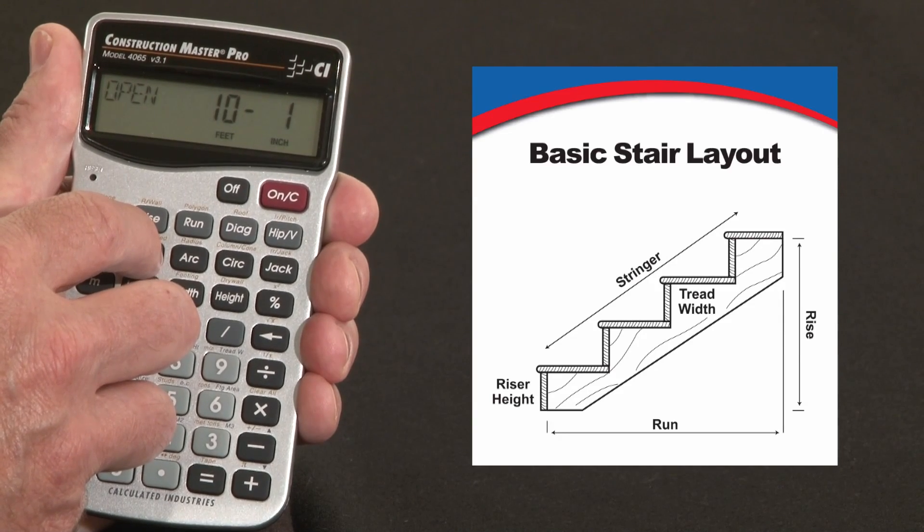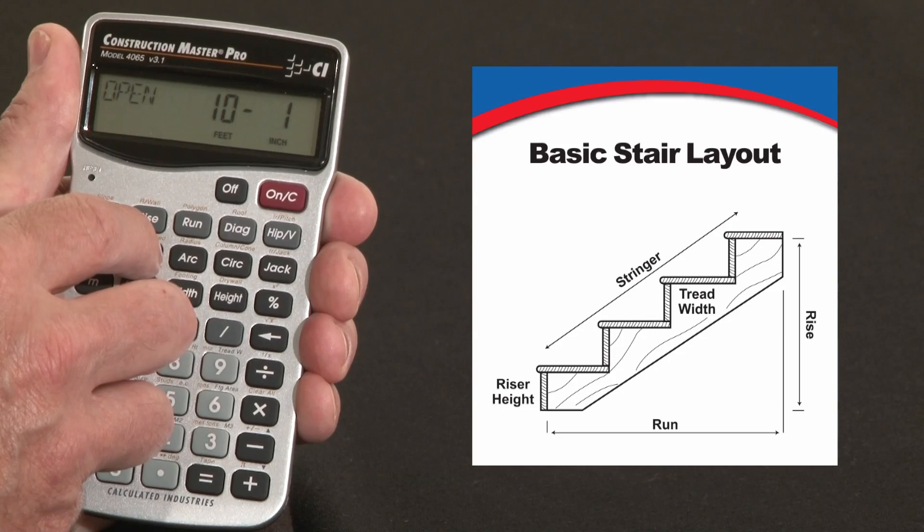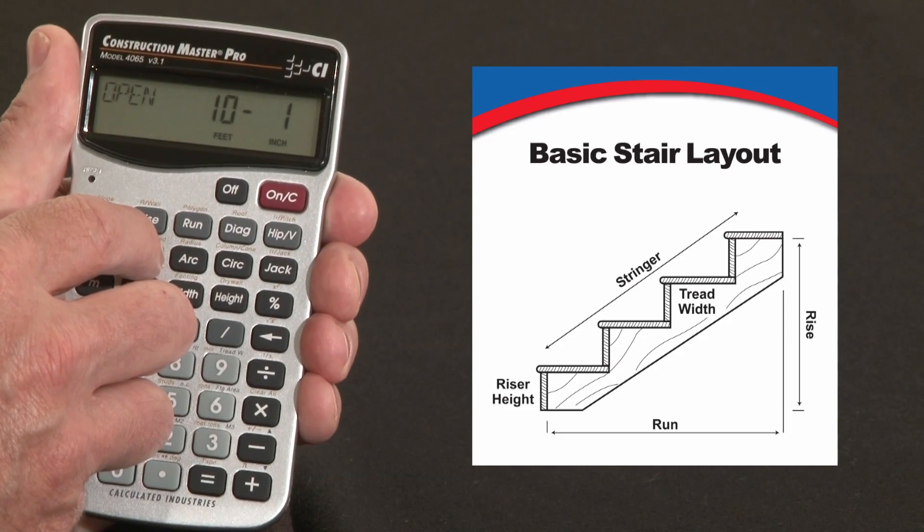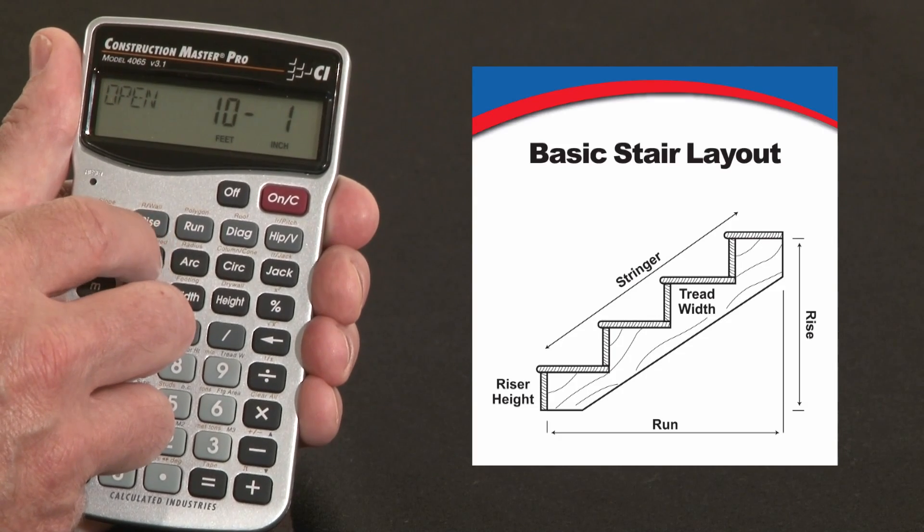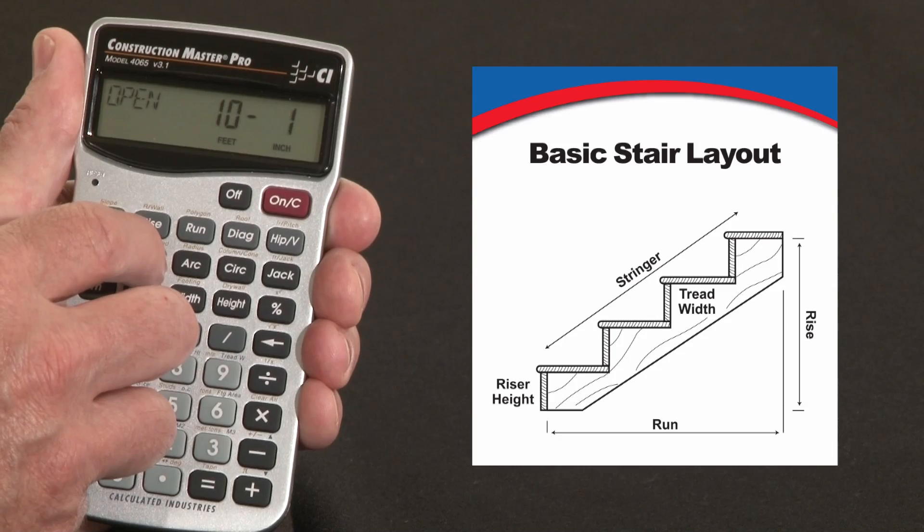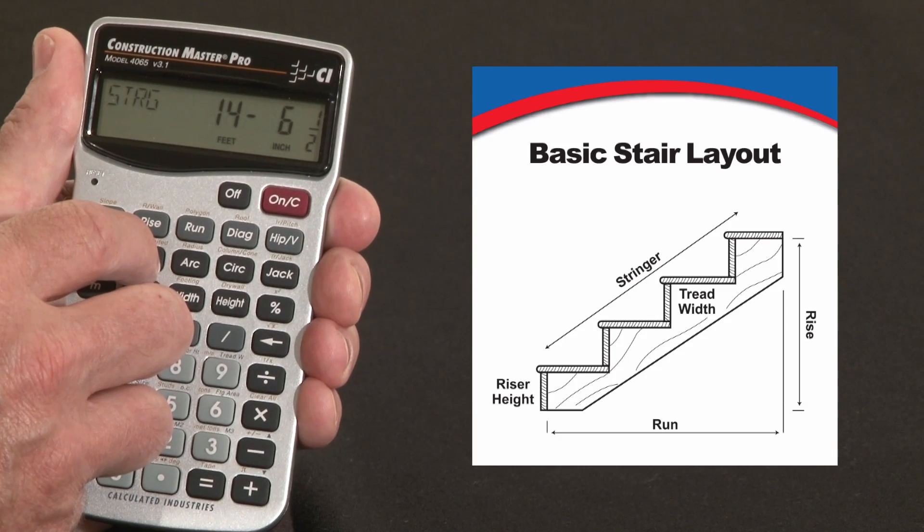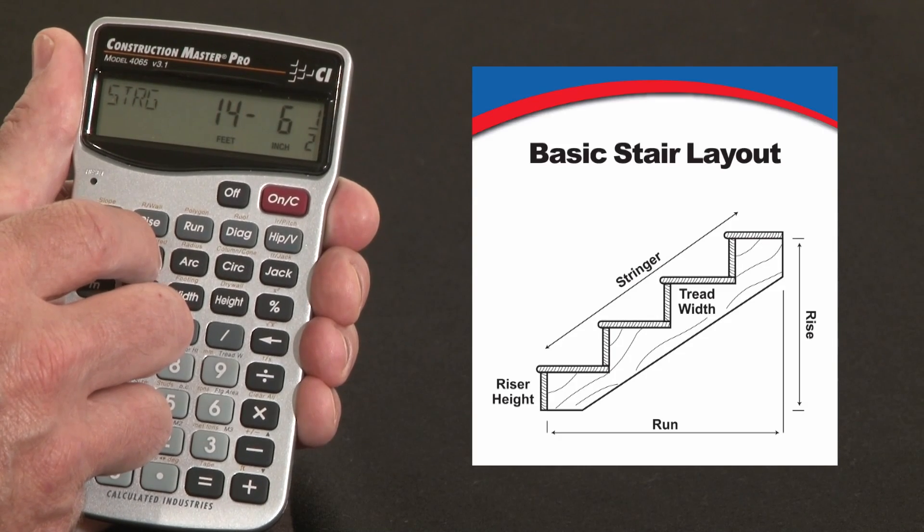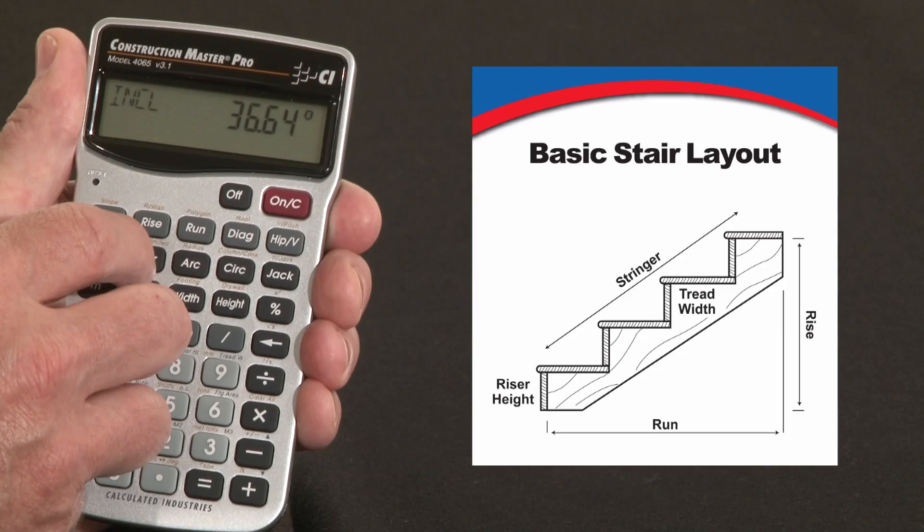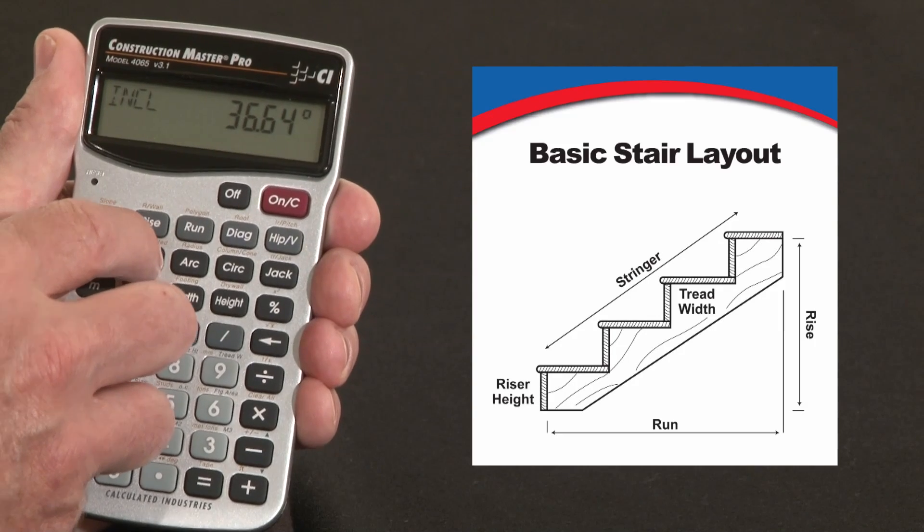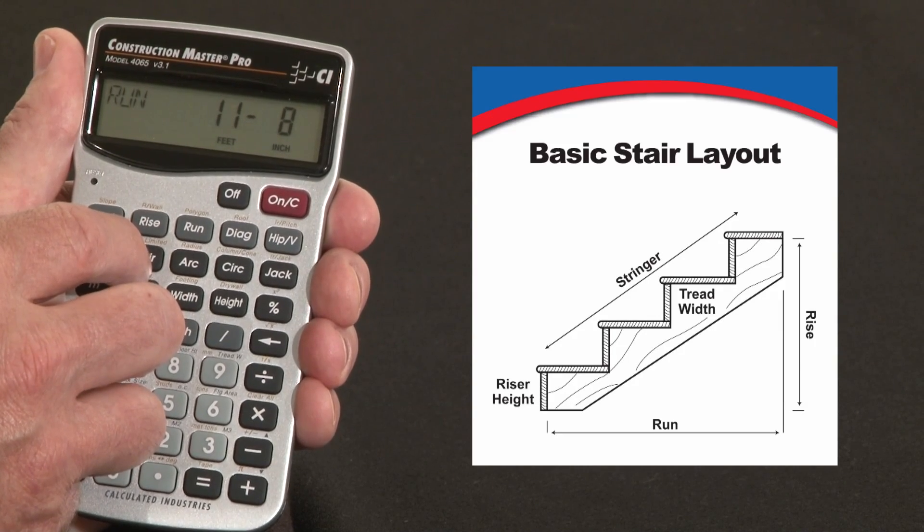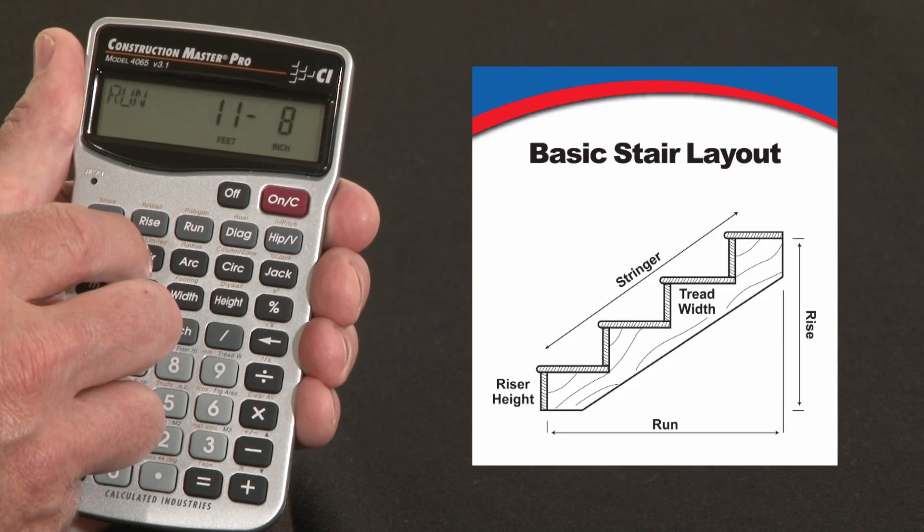The stairwell opening is 10 feet 1 inch, that's based on the default setting we have for the headroom clearance, which is 6 foot 8, which you can change if you like. And the next press gives us a stringer length, 14 feet 6.5 inches and the angle of incline. The final press gives us the total run of the stairway, which is 11 foot 8 inches, which would probably work in this situation.